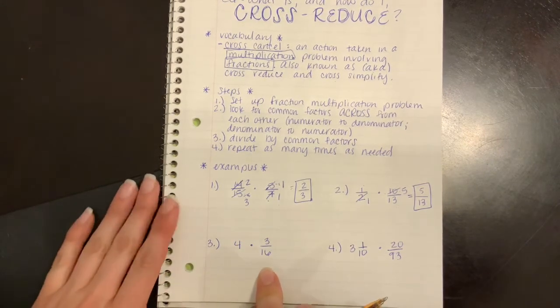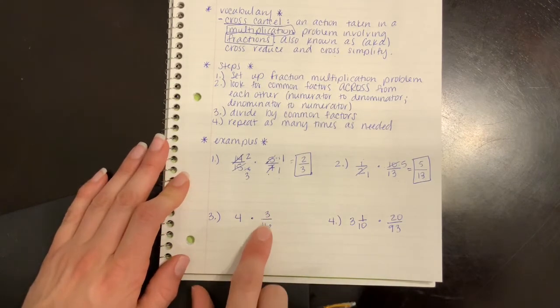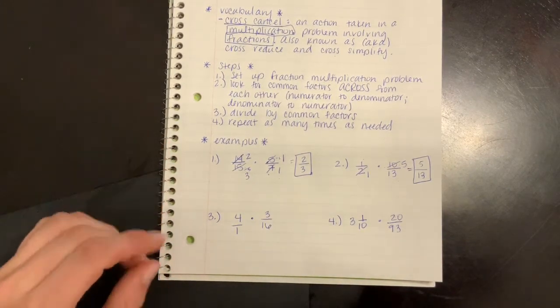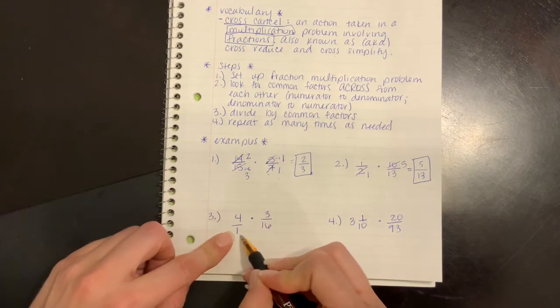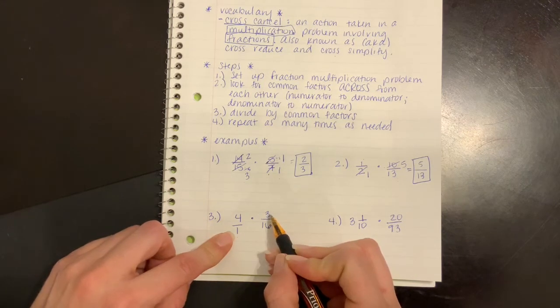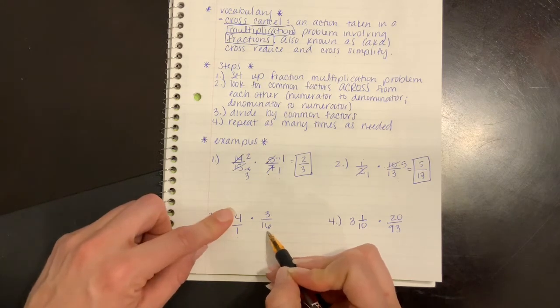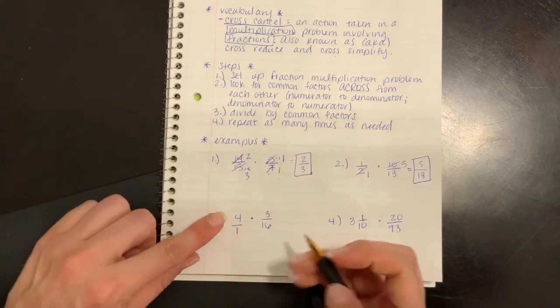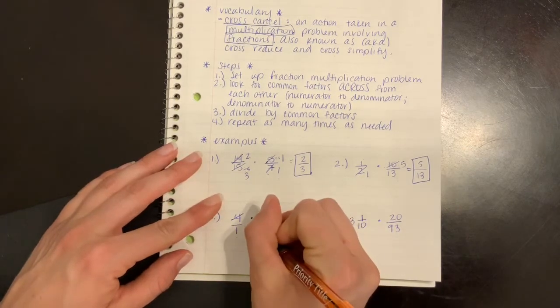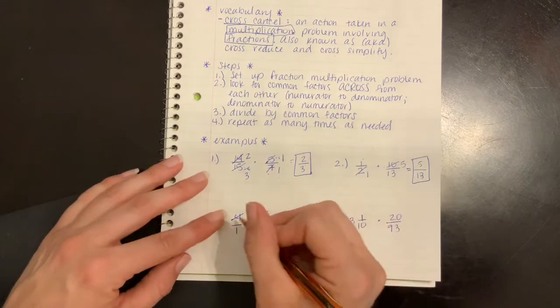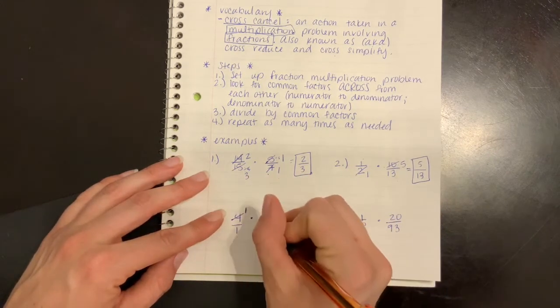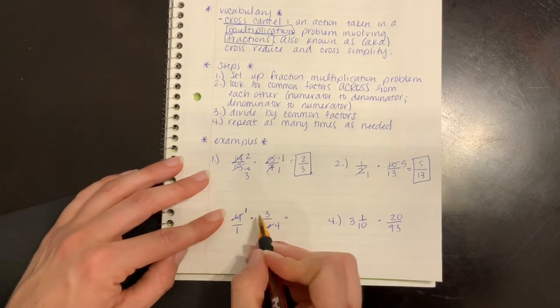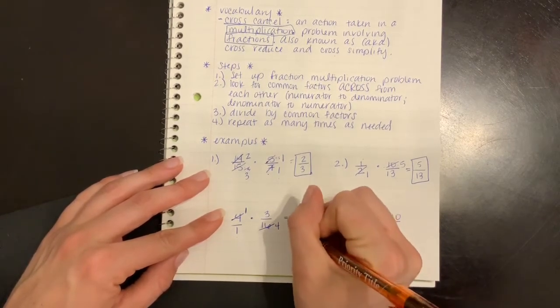Let's do it again. I have 4 times 3/16. Since this is a whole number, I am going to put it over one, just to kind of help me keep my fraction straight. I'm going to be looking across at one and three. They can't get any smaller than they are. Looking at four and sixteen, I have a common factor of two, and I have a common factor of four. I'm going to use a common factor of four, because it's my greater common factor, and that way I won't have to repeat this. Four divided by four is one, and sixteen divided by four is four. Multiplying straight across, one times three is three, and one times four is four.